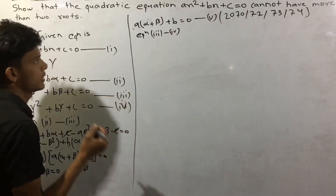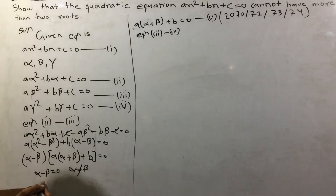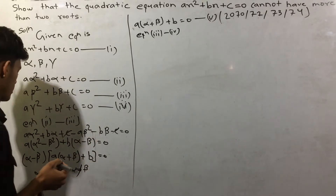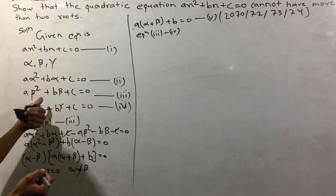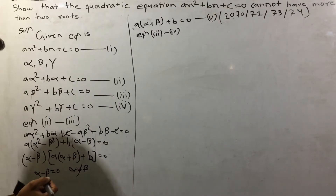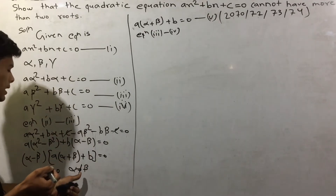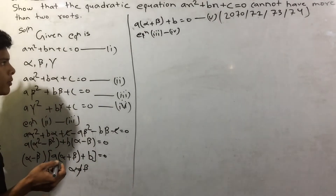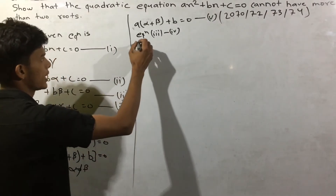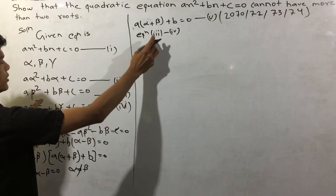What is this? This is alpha minus beta. What is this? This is beta minus gamma. And beta is equal to gamma, so that we will say that the equation is 3.